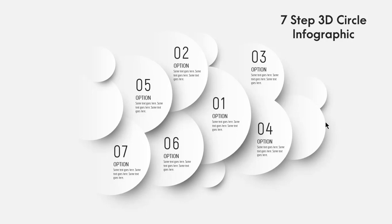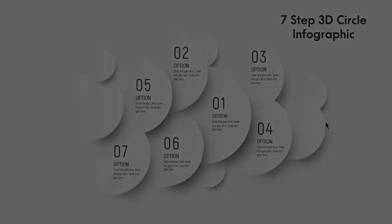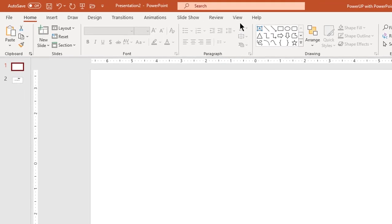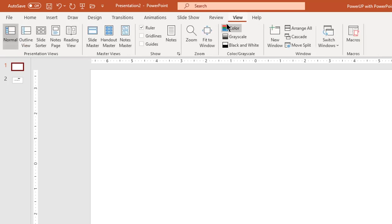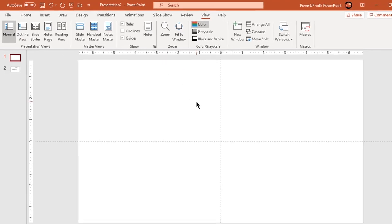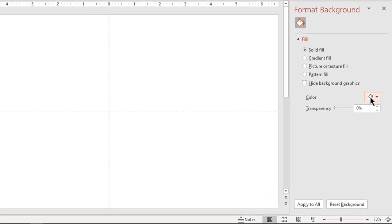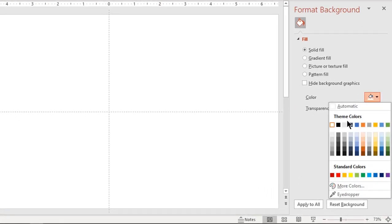Hello and welcome back again. Today we are going to create this beautiful 3D infographic design. Let's first enable the guides and then format our background. Right click and choose format background. Let fill type be solid and change the fill color to light gray color.